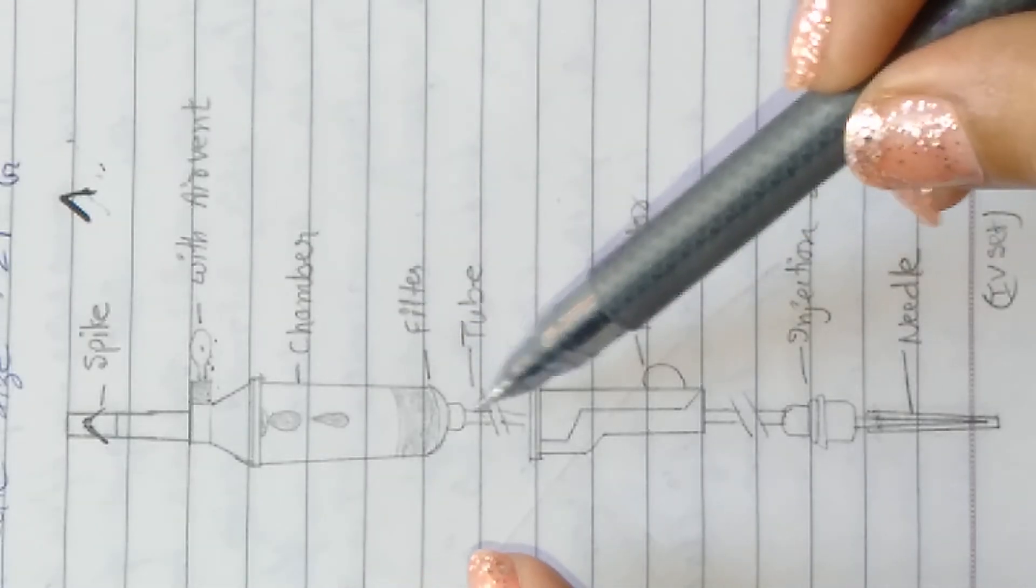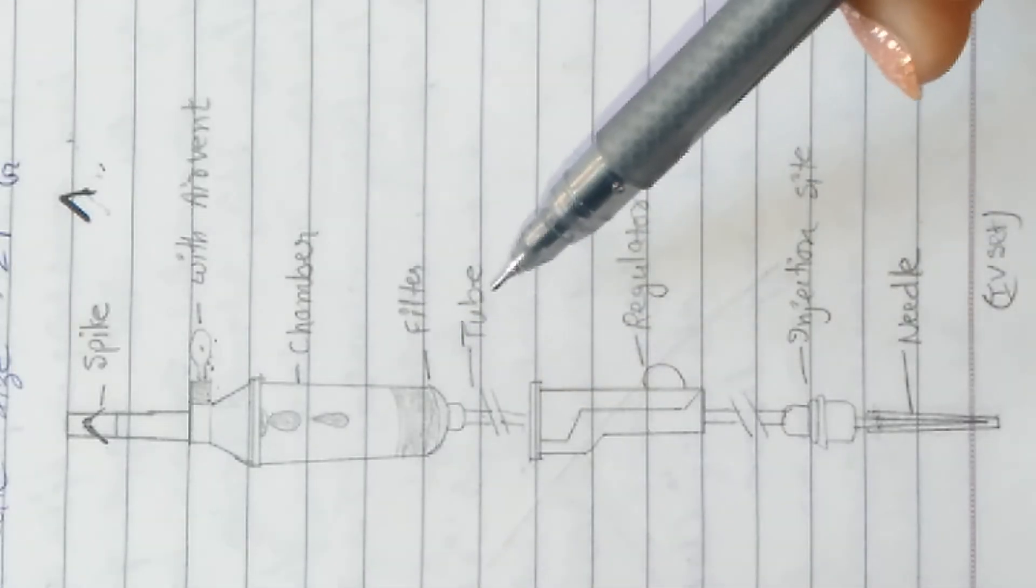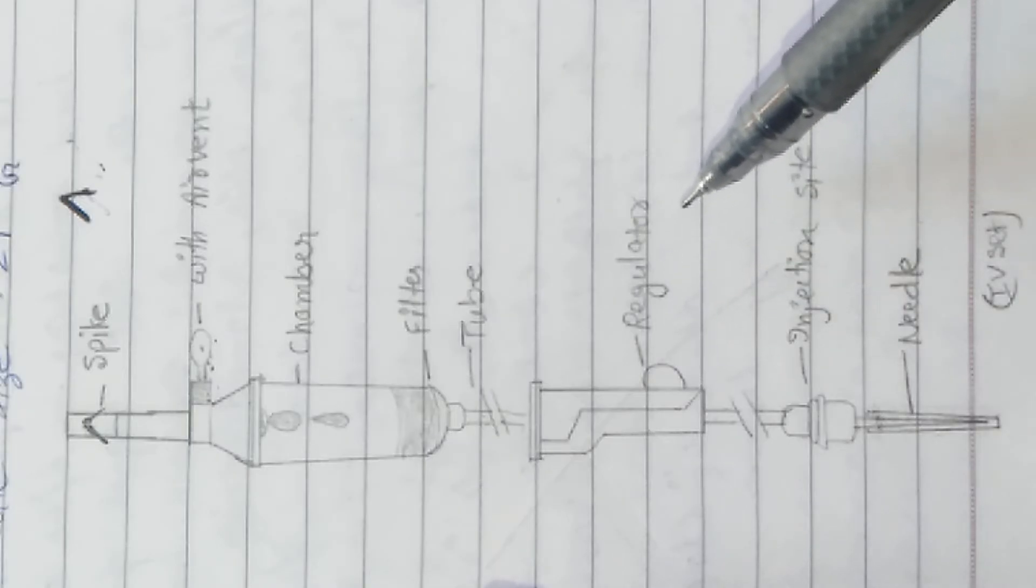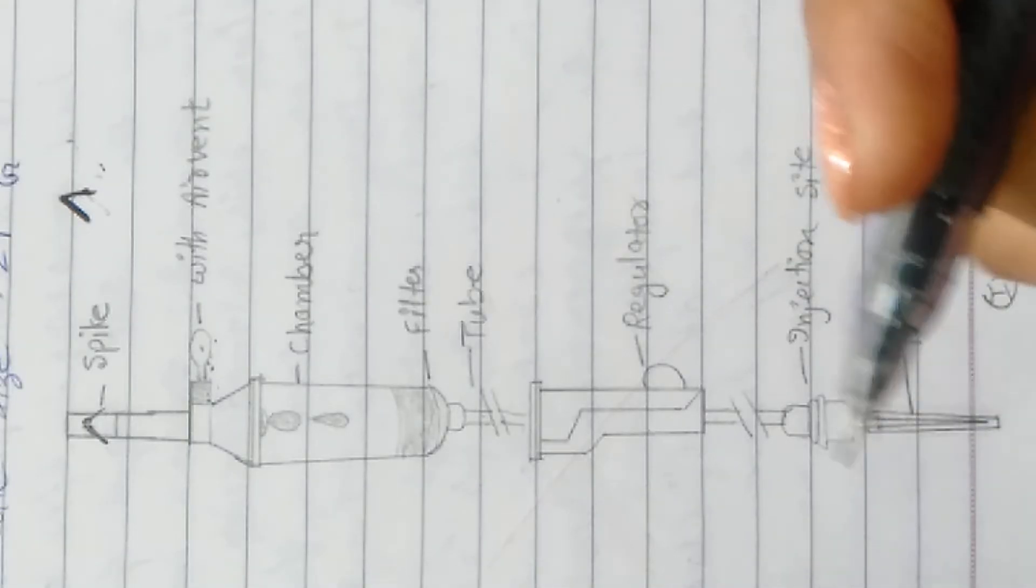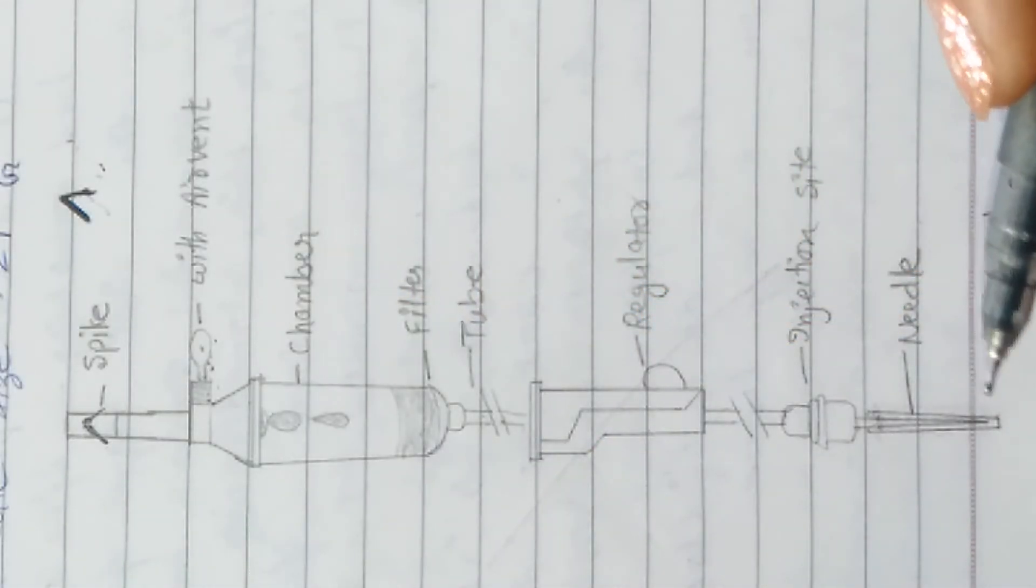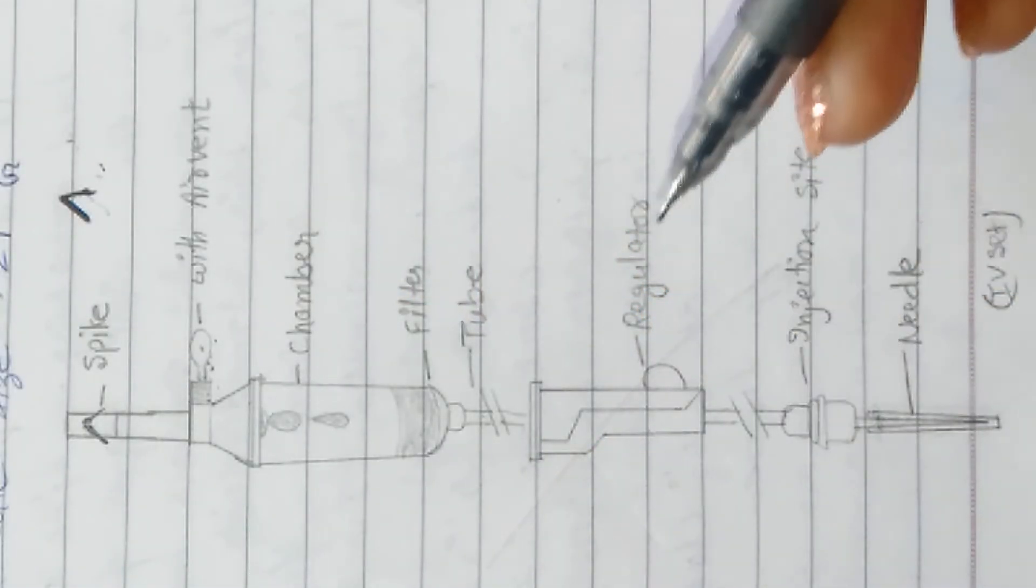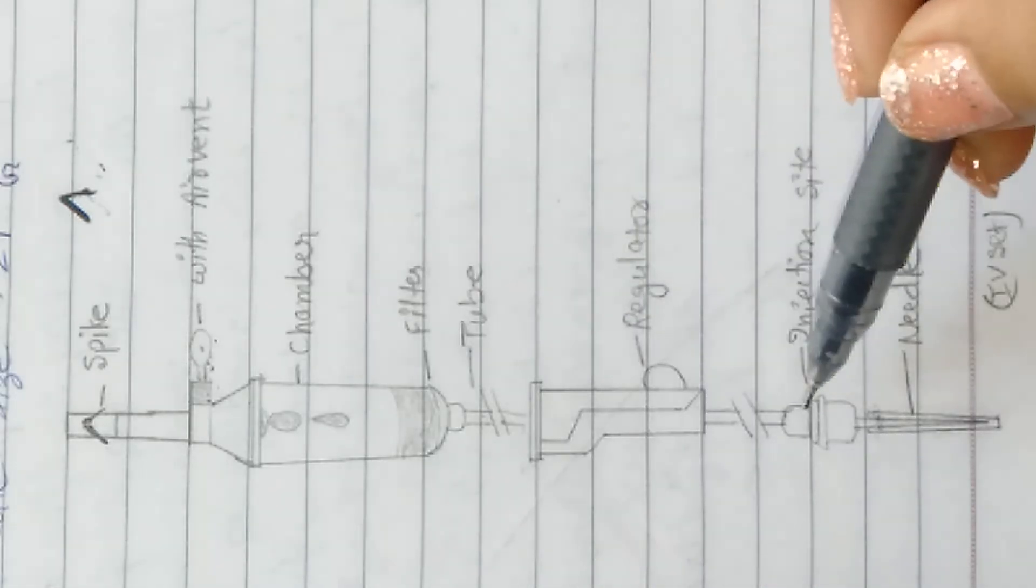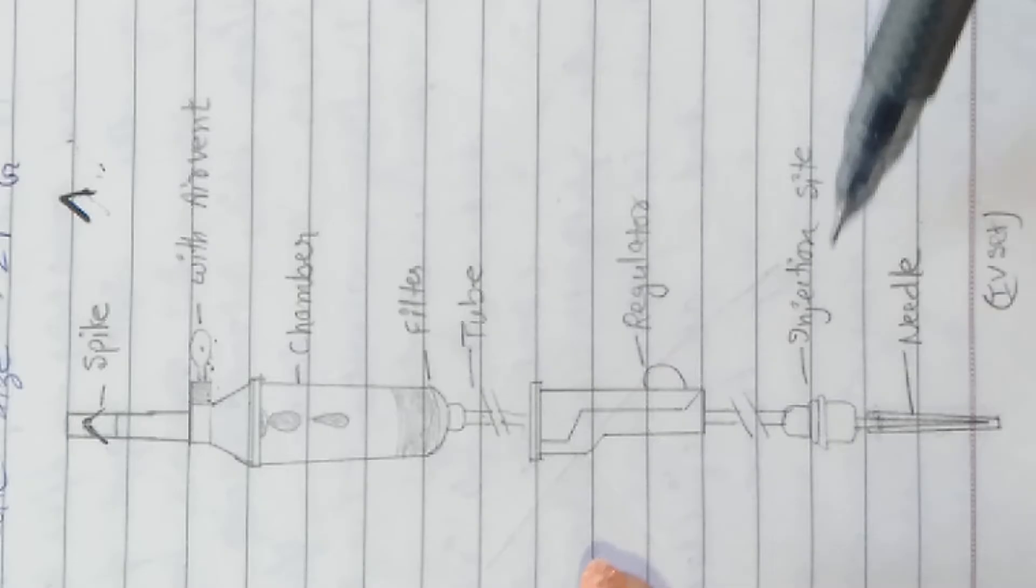After that, there is tubing. This is known as the regulator or flow regulator, which is used to control the fluid flow. You can set how many ml you need. Next in the tube, there is the injection site where the cannula is attached.